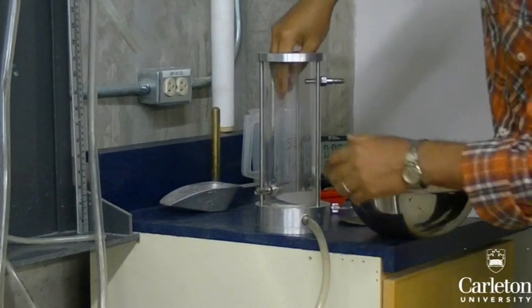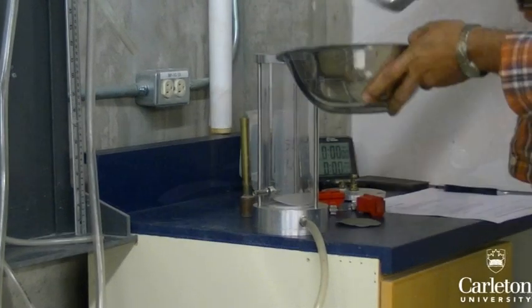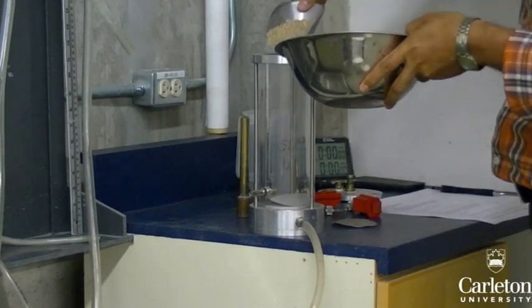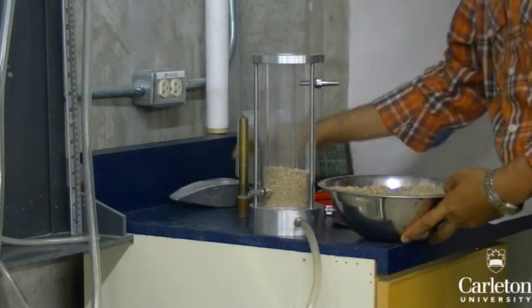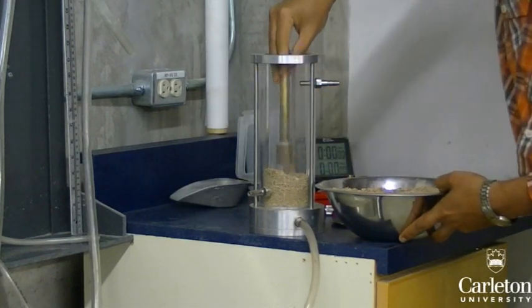Place a screen at the bottom of the cylinder. This prevents the soil from being carried out. Fill the cylinder with the soil sample. Split the soil into about three layers, and compact each layer with a hammer.